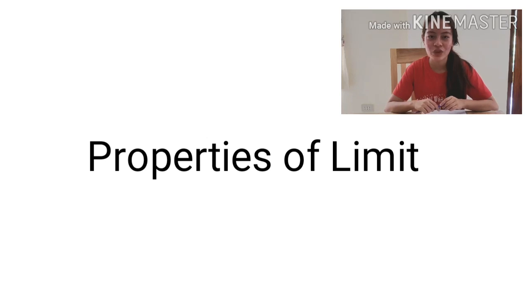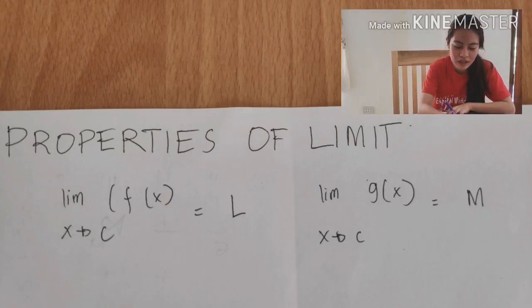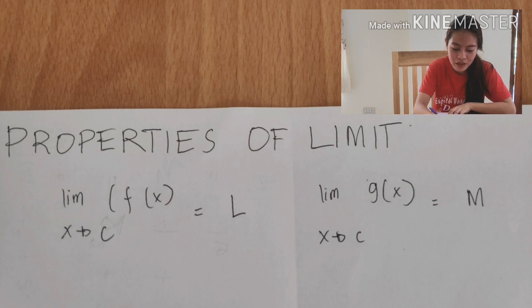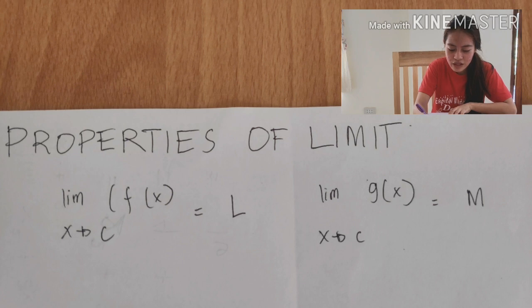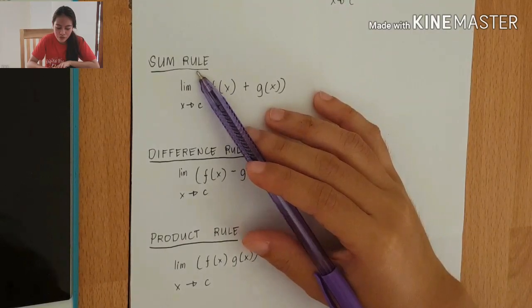For today's video, I will talk about the properties of limits. We have limit f(x) as x approaches c is equal to L, and limit g(x) as x approaches c is equal to N.